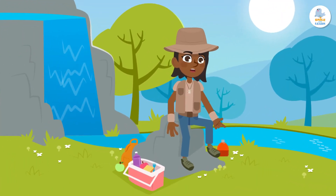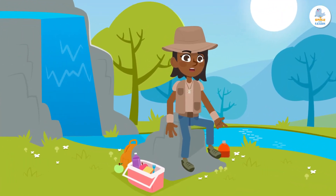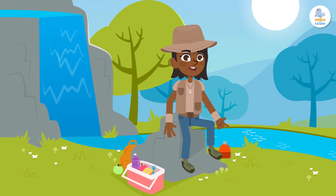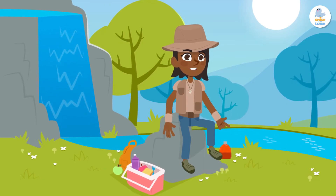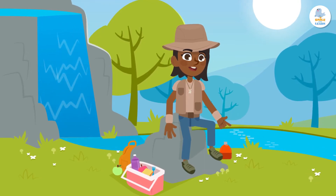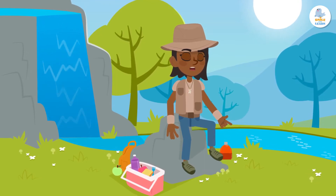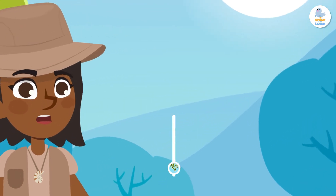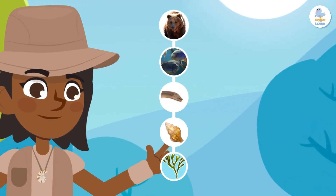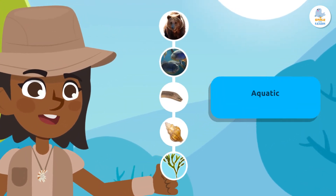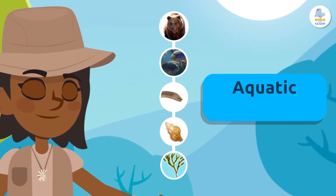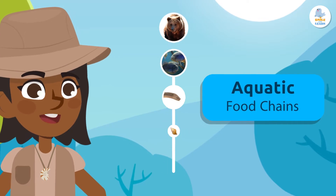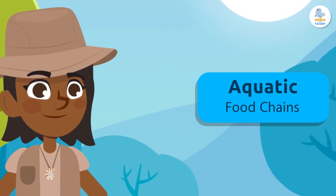Remember, we can classify food chains by the habitats where the living beings in the chain get their food. If all of the living beings get their food from aquatic habitats — even if one of them lives on land — we classify the chain as aquatic.